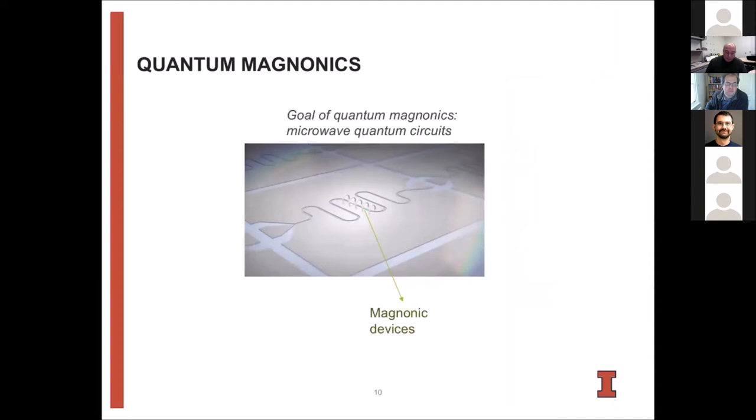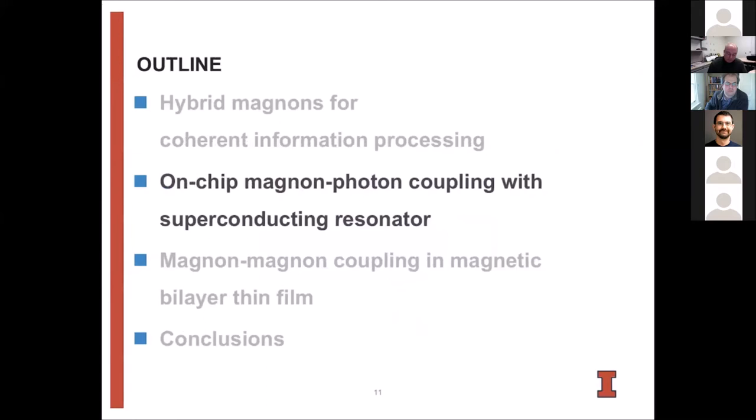But what my goal is now is to discuss more how can we engineer magnon systems in a more planar circuit type of device, where we have, let's say, a superconducting resonator, and we integrate a magnetic device inside of it. So that's what I'll discuss next.